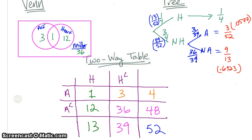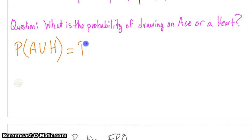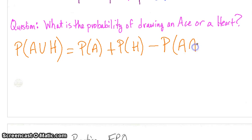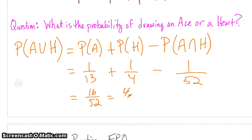Once we have these representations, we can ask ourselves: what is the probability of drawing an ace or a heart? That's our union — the probability of ace plus the probability of heart minus the probability of ace intersect heart. That's 1/13 plus 1/4 minus 1/52, which gives us 16 out of 52, which reduces to 4/13, or 0.3077 to the nearest ten-thousandth.